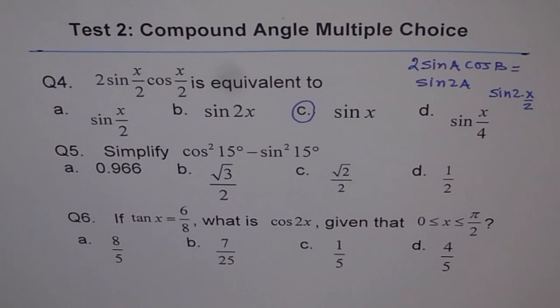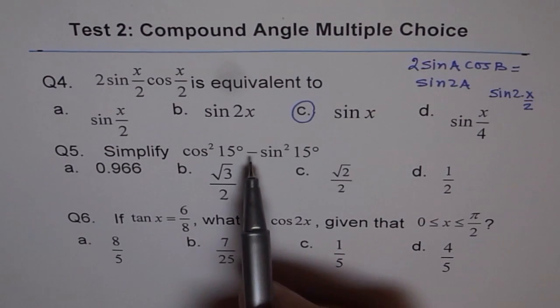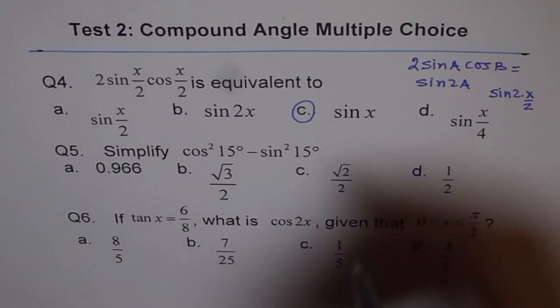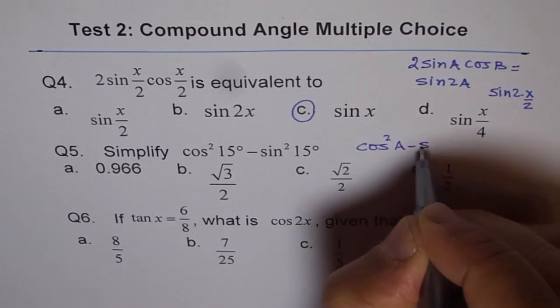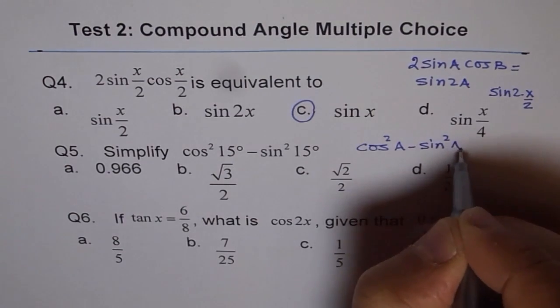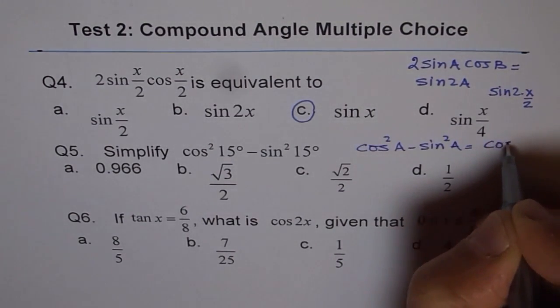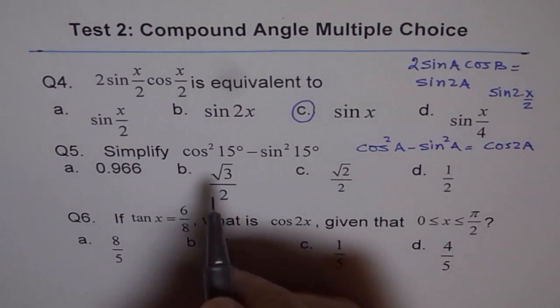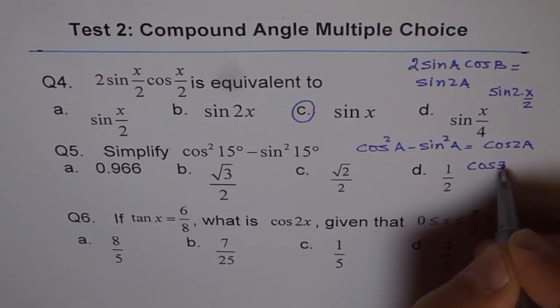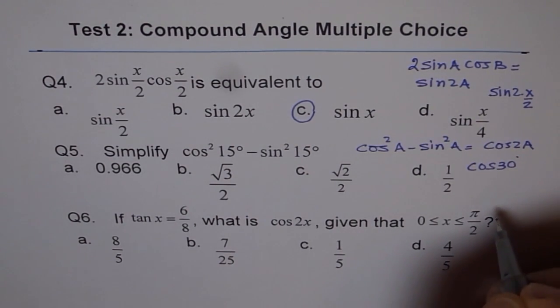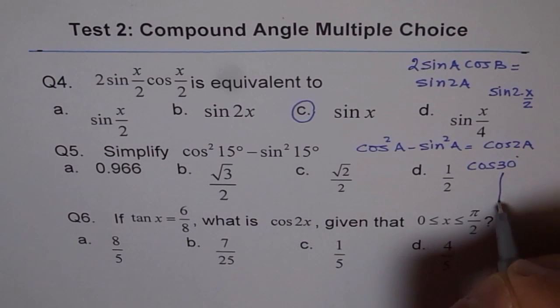Question 5: Simplify cos²15° - sin²15°. Now cos²a - sin²a is how much? It is cos(2a). Since the angle a is 15, we can write this as cos(30°). What is cos(30°)?